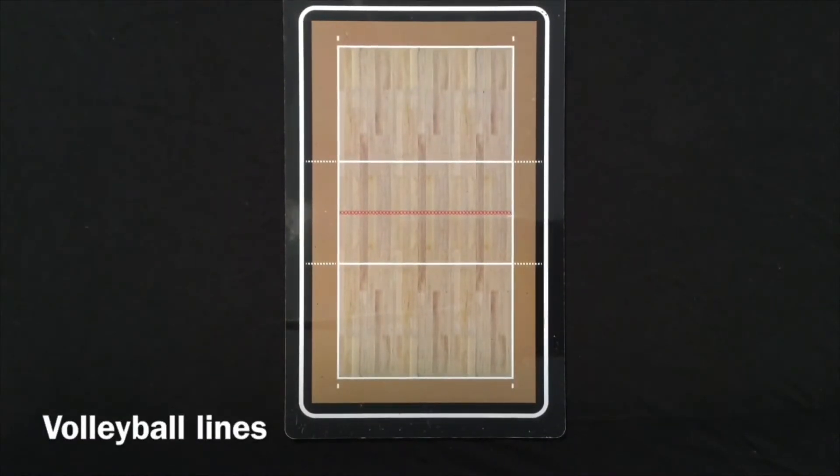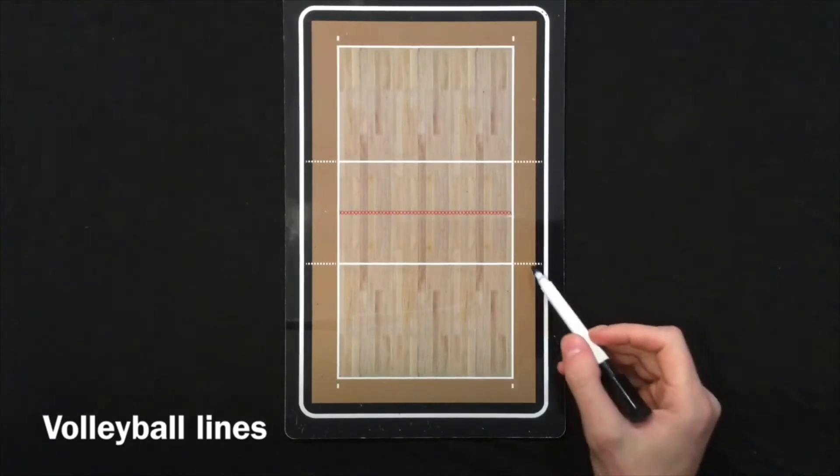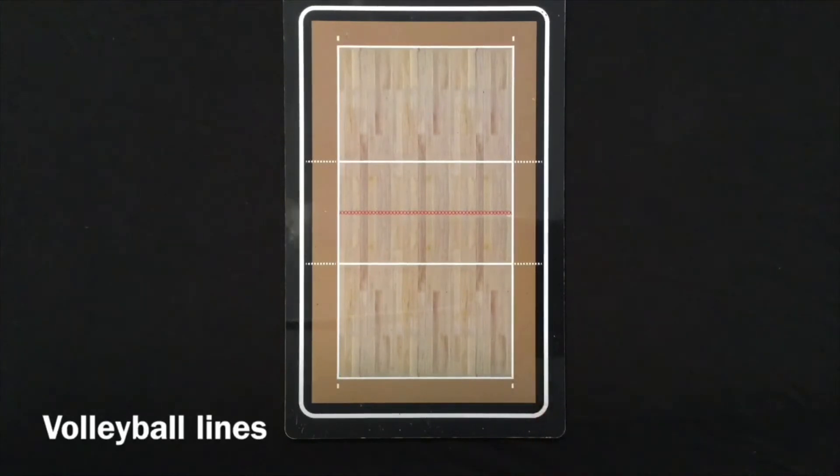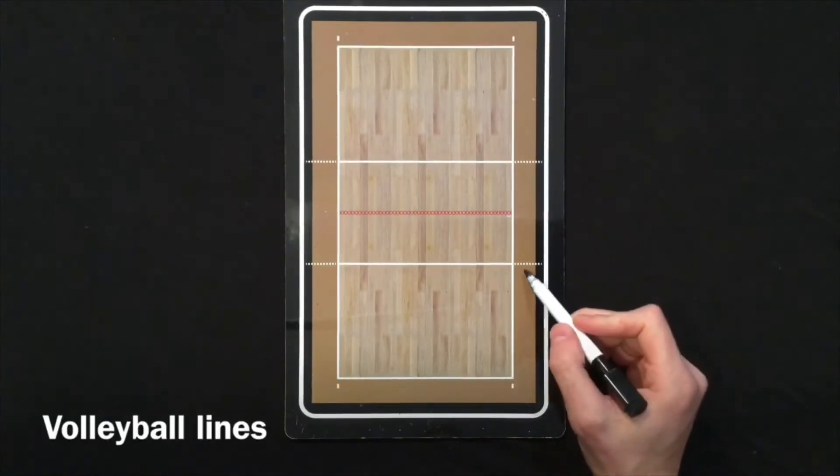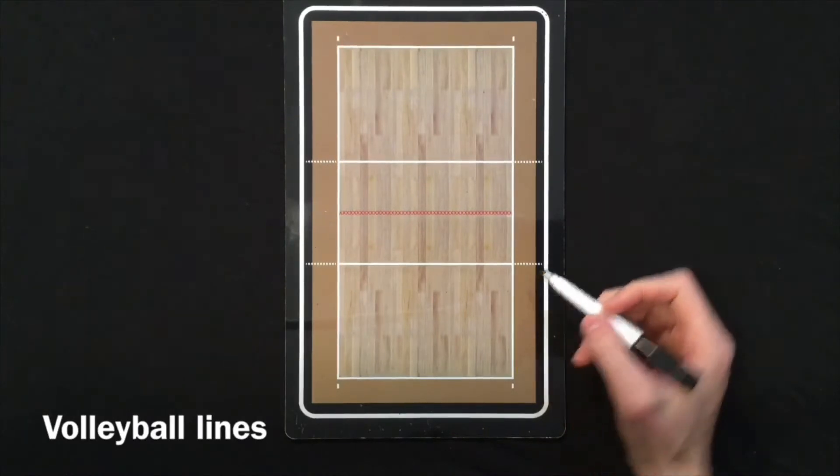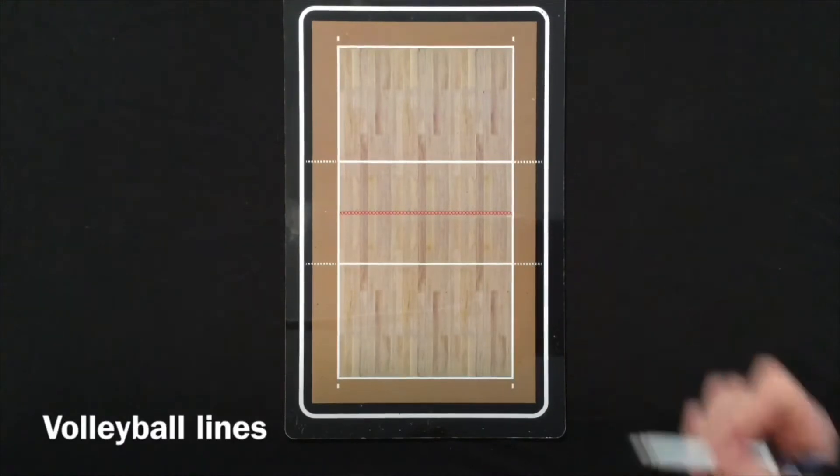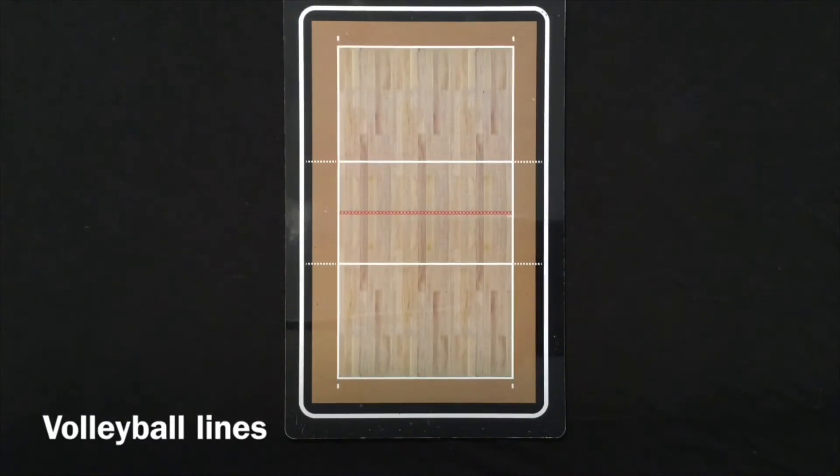The last set of lines here are these extra dashes outside the court. Along this ten foot line, two purposes for this set of lines is if a back row player is attacking from off the court, it can help determine whether that player is back row or front row, or if they foot fault on that ten foot line which would be a violation.